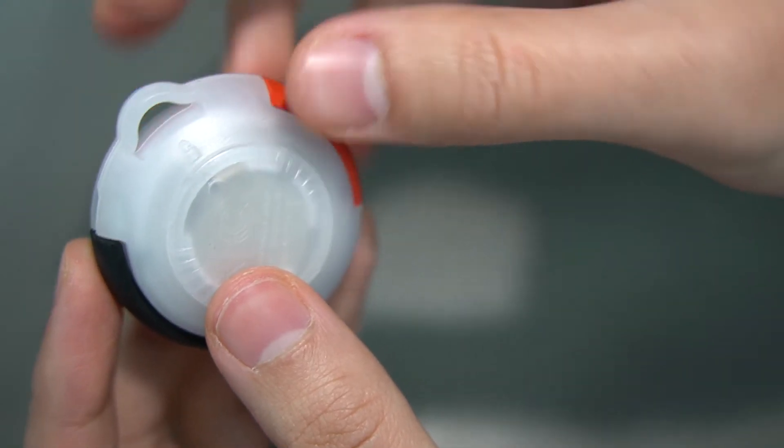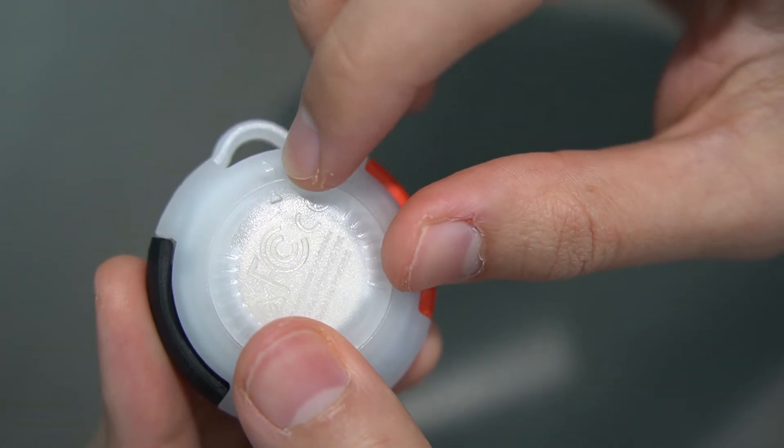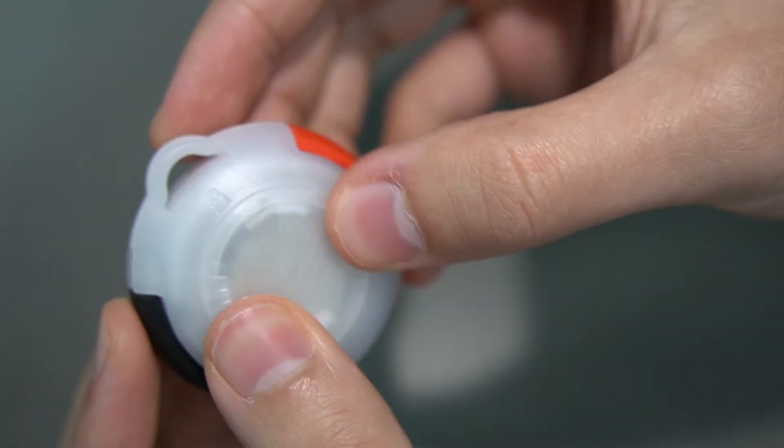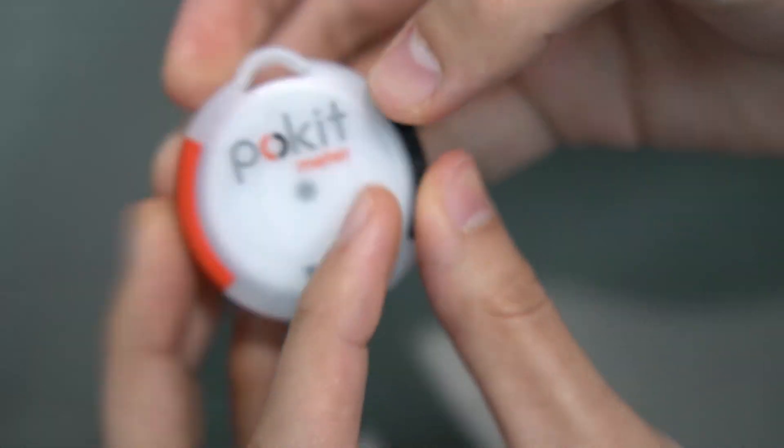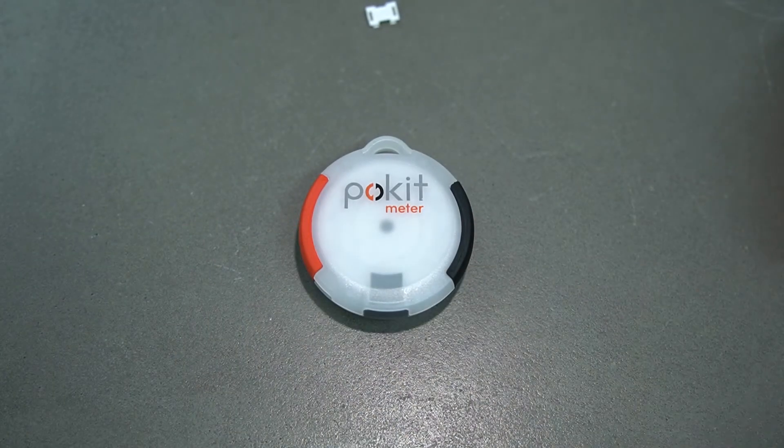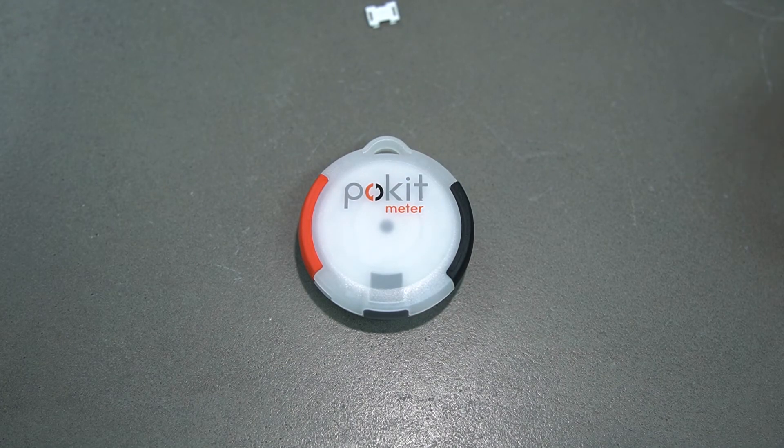So you just want to put that little arrow there pointing up towards the lock, and then you just twist it until it clicks. And that's how to change the fuse and battery for pocket meter.